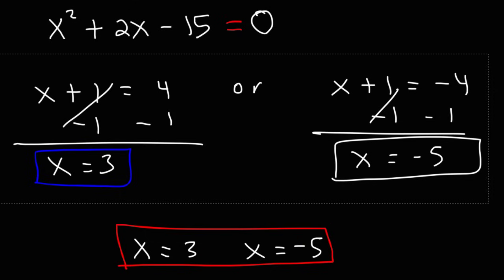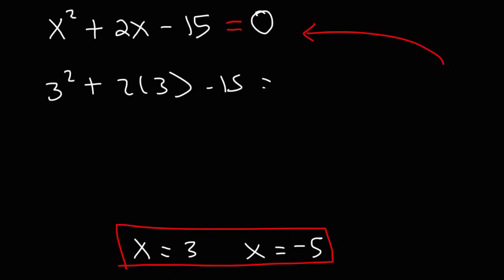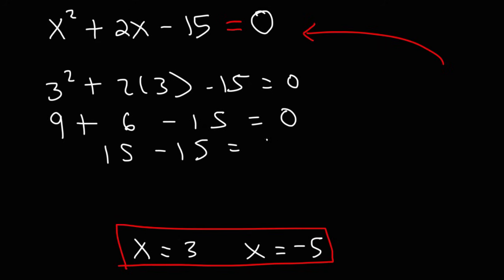How do we know if we have the right answer? Well, what we can do is check — we can plug it into the original equation. Let's start with 3: replace x with 3. We're going to get 3 squared, which is 3 times 3, that's equal to 9. 2 times 3 is 6. And 9 plus 6 is 15. Now 15 minus 15 is 0, and the left side equals the right side. So this answer is correct.